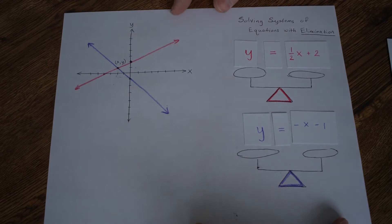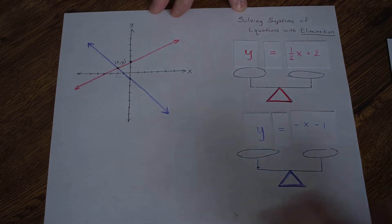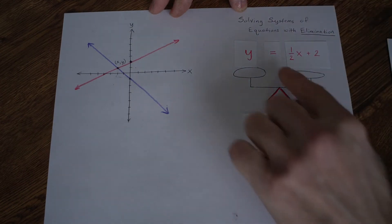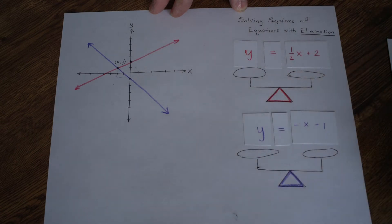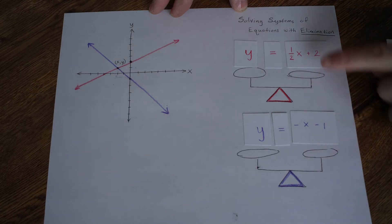The understanding that is helpful to have is how equality works. These equal signs, that means that these scales remain balanced all the time. But we also need to understand the equality between these two equations.